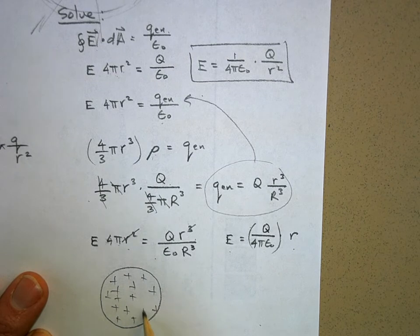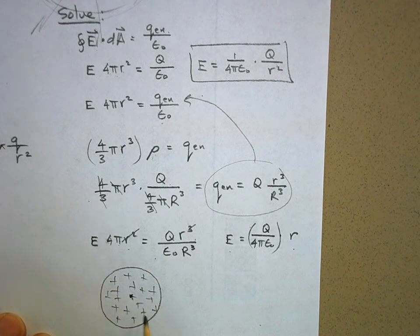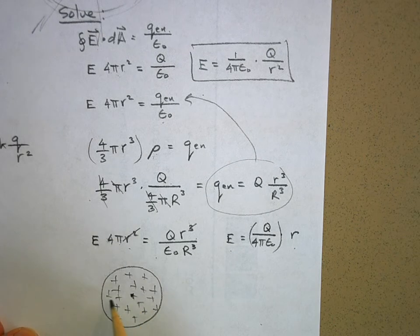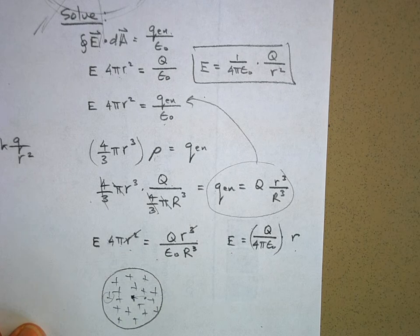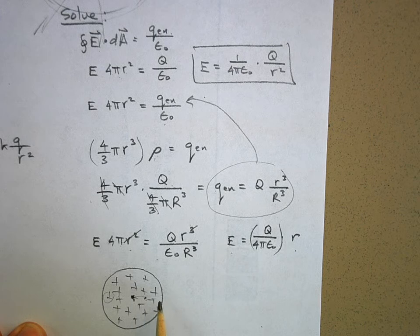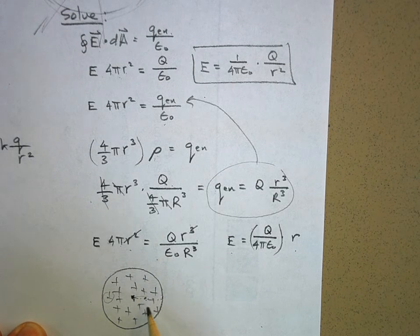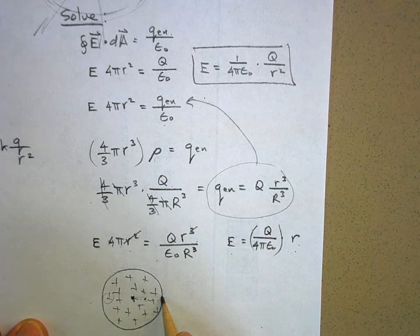Does this make sense physically? At the very center, the electric field should be zero — all charges cancel by symmetry. If you're a little off to one side, there's more charge pushing you one way than the other, so you feel a small force. The farther out you go inside the sphere, the more charge is to one side, so the electric field grows linearly with r.